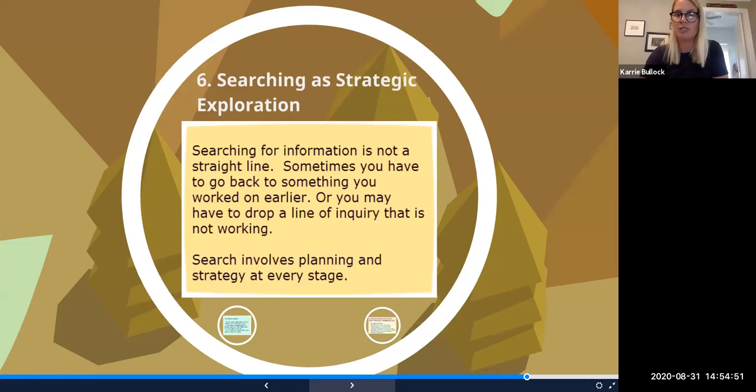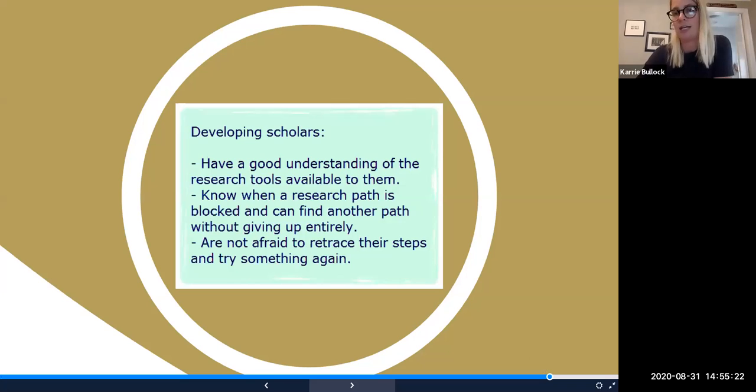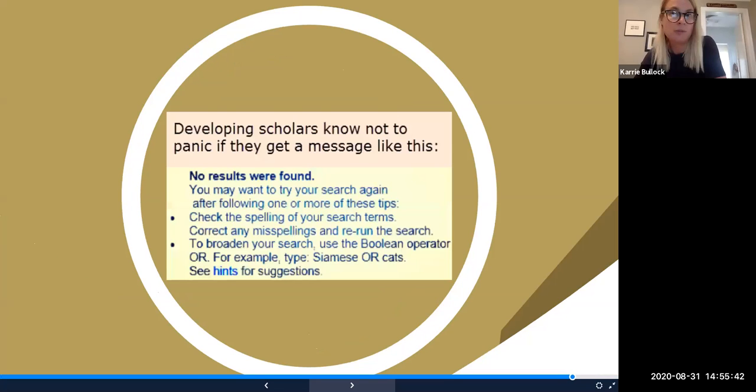And then we come to searching as strategic exploration. All right. So again, searching for information is not a straight line. It's recursive, meaning we move forward and then we move the dial back. It's never, we don't go all the way back to the beginning because we've gotten information and some knowledge moved up to that point, but it's never a straight line. So you may have to drop a line of inquiry that is not working, or maybe you eventually decide that you do like it. Having a good understanding of the tools available to you is very helpful. And we've already started taking our steps in that direction with Boolean operators using truncation quotation marks around phrases and, or not, and planning your research path as well, which is something that we're going to get into module two deeply. And then finally...